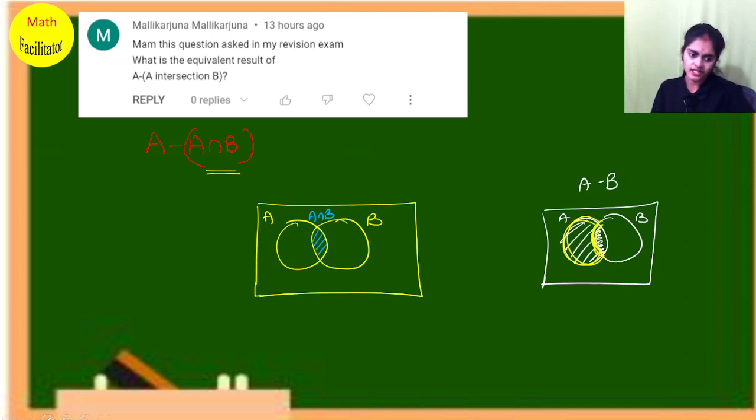Now for A minus A intersection B, A intersection B is this blue part you're seeing. From A, I should subtract A intersection B. What is common between A and A intersection B? It's A intersection B itself. You have A here and A intersection B is this part.